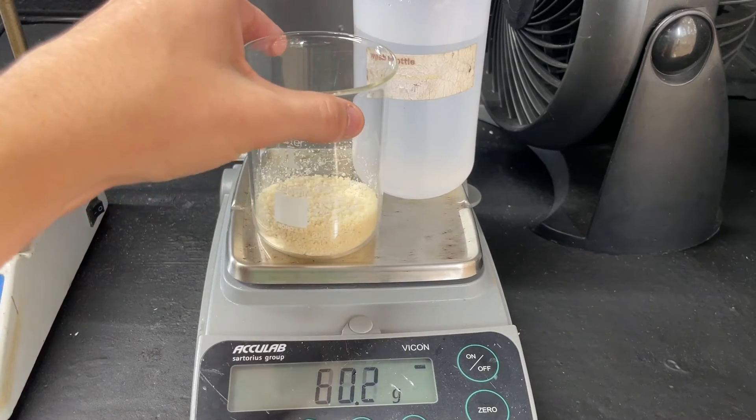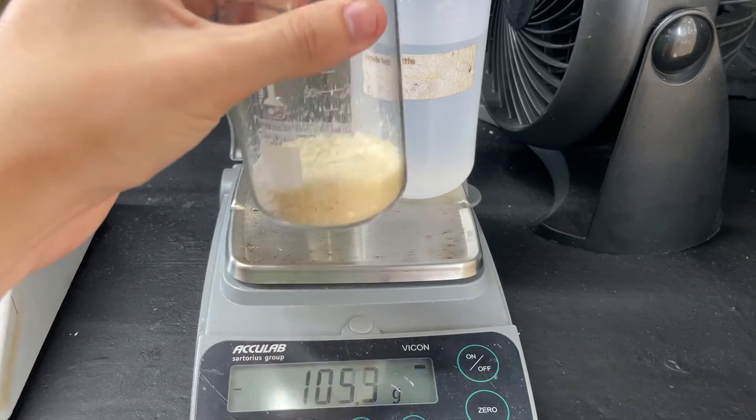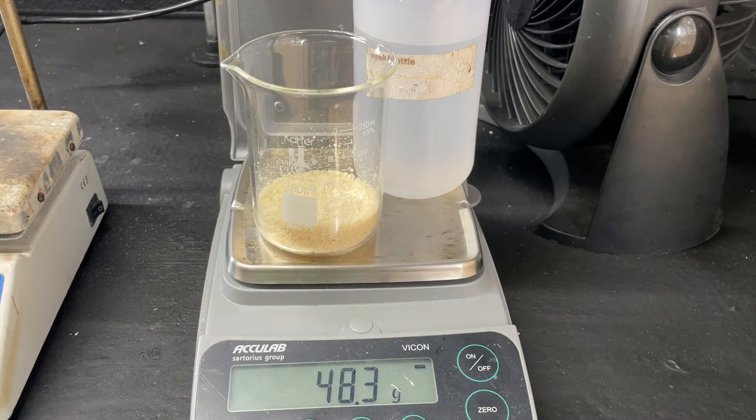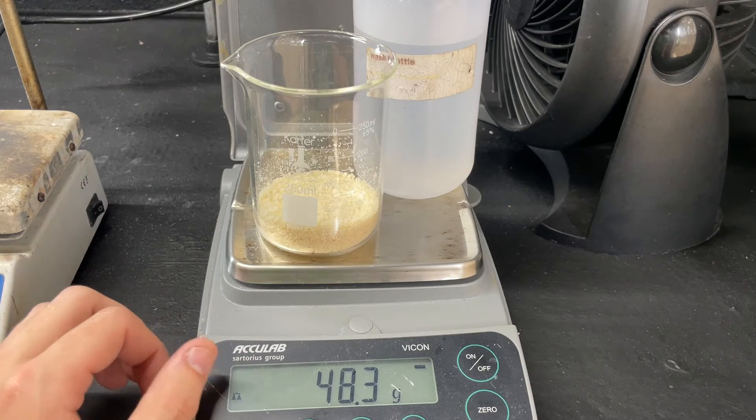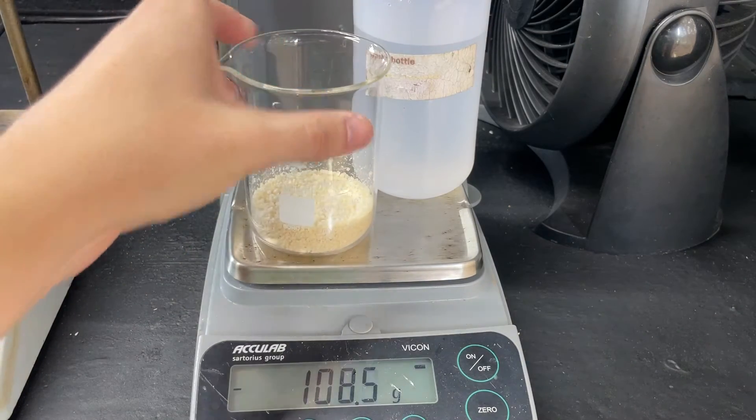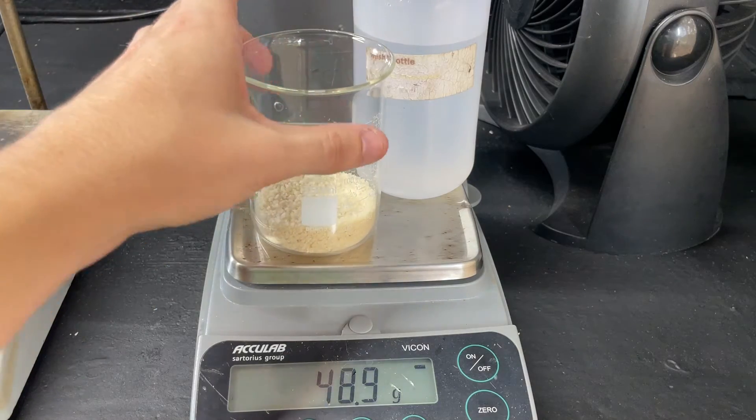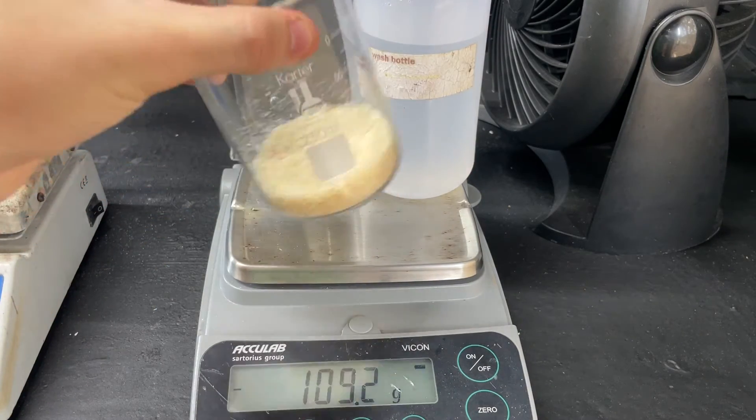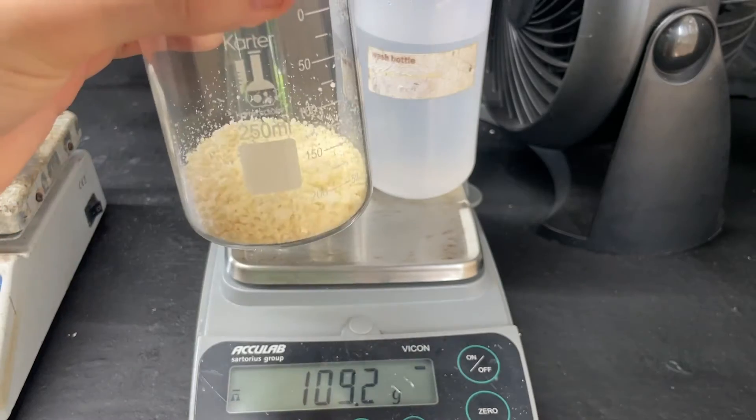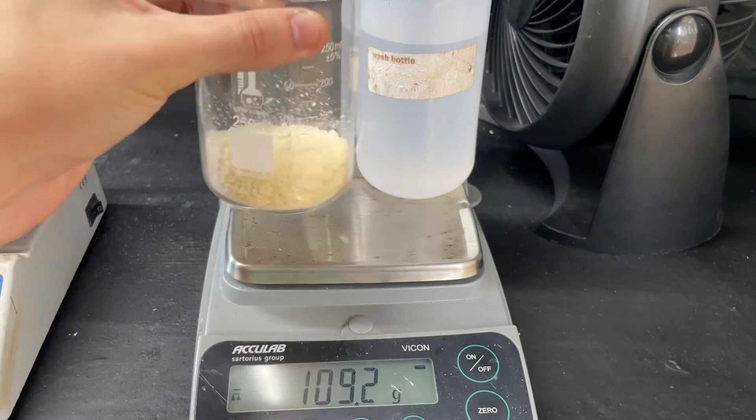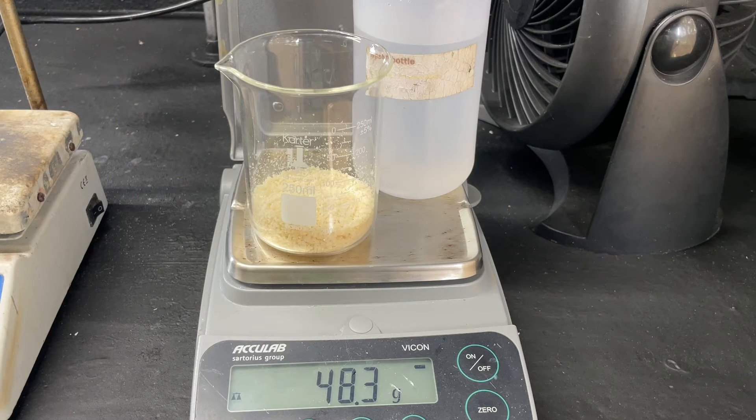Our final yield after drying comes out to 48.3 grams. This is kind of suspicious because this reaction should only produce about 41 grams at about 60% yield. We're looking at probably 70% yield here, which is very suspicious for this reaction. You're very lucky to get 60%, so either we're really good or there's maybe some extra water weight. I don't know where the extra weight's coming from. We might just be that good at chemistry, but I highly doubt that hypothesis.